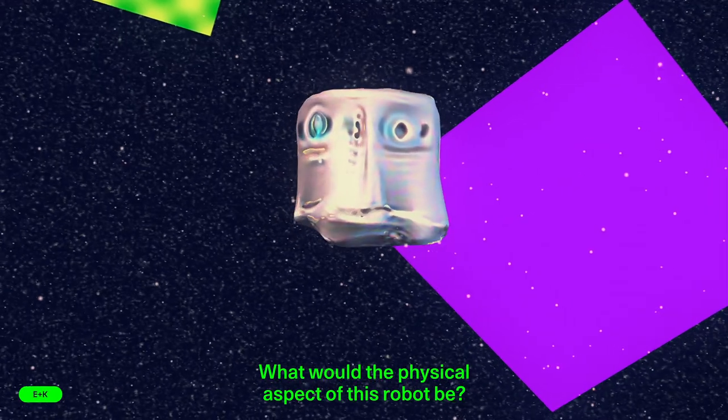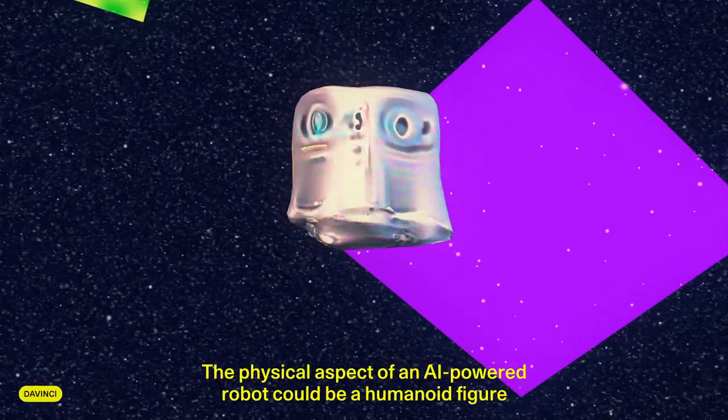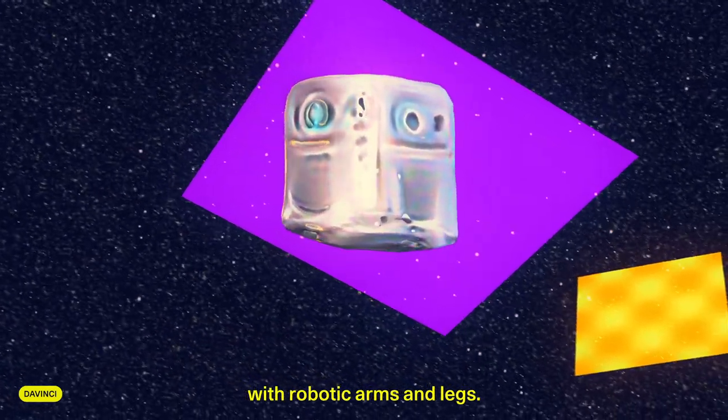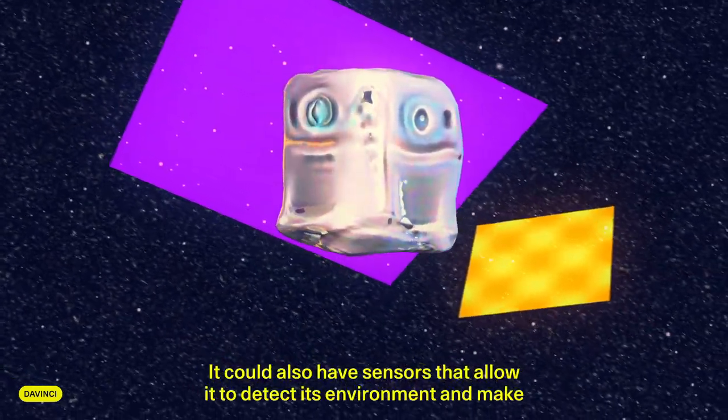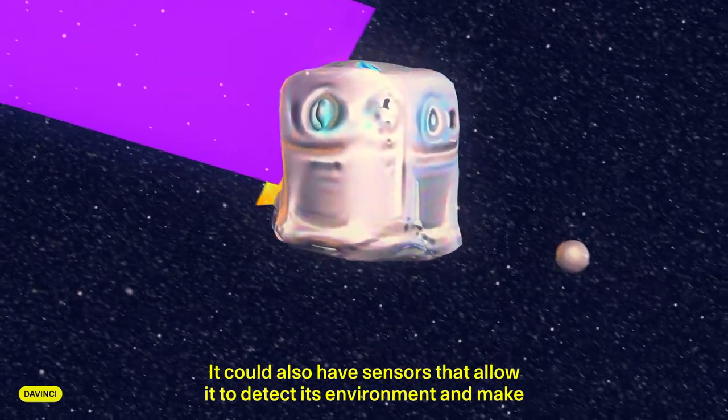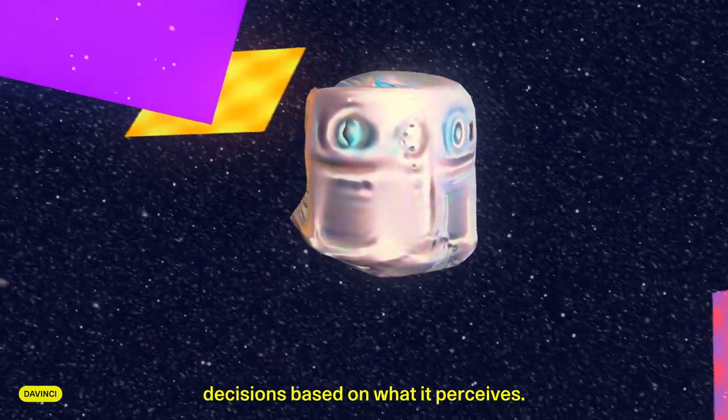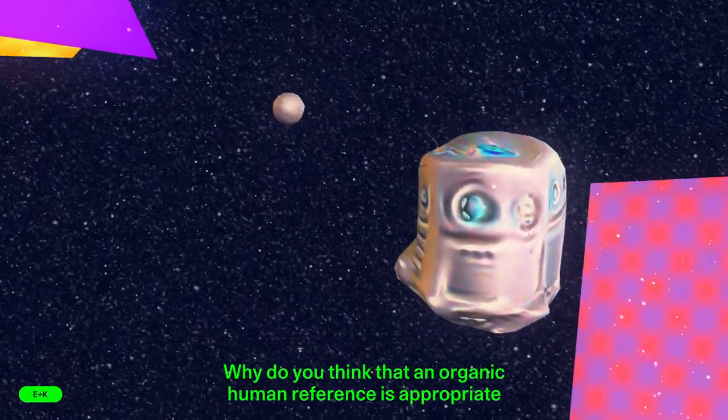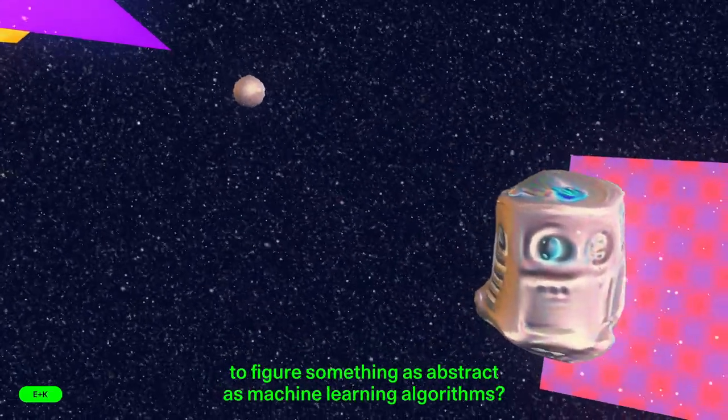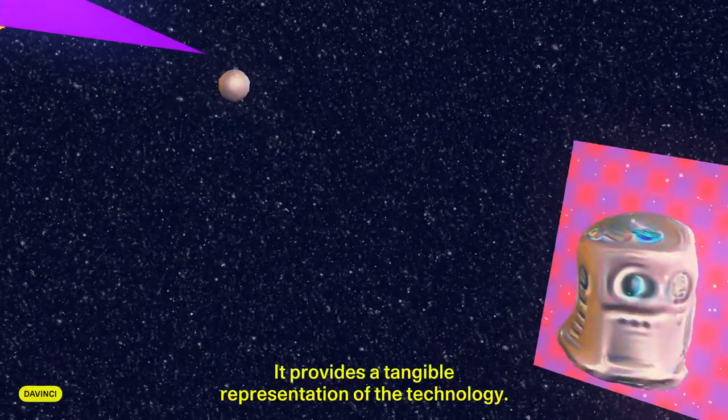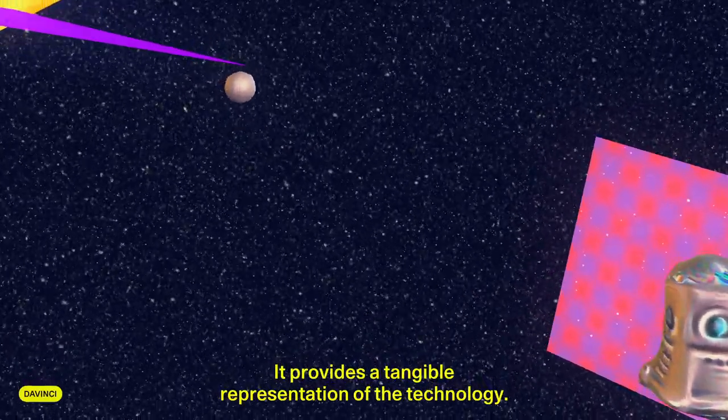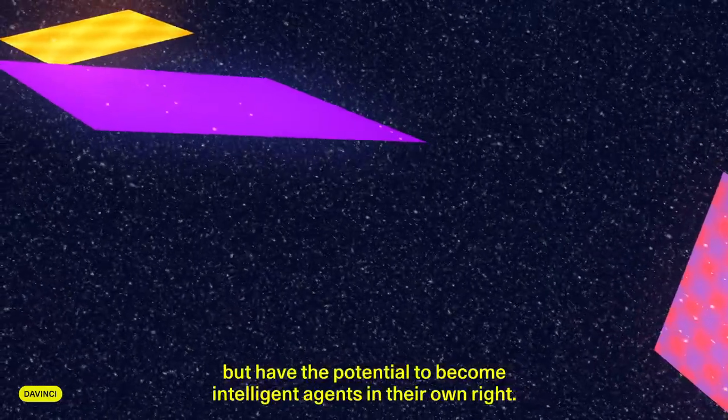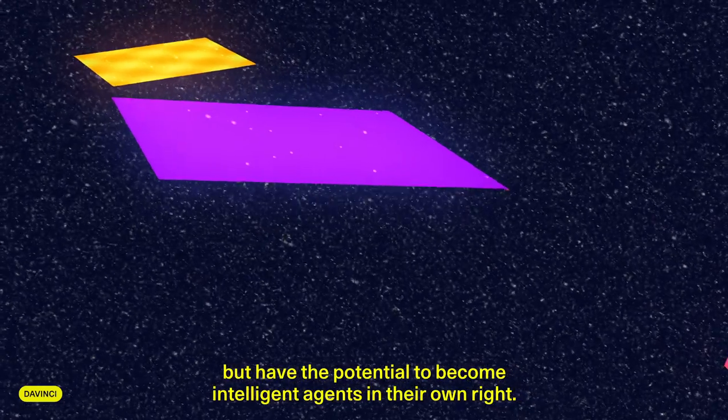What would the physical aspect of this robot be? The physical aspect of an AI-powered robot could be a humanoid figure with robotic arms and legs. It could also have sensors that allow it to detect its environment and make decisions based on what it perceives. Why do you think that an organic human reference is appropriate to figure something as abstract as machine learning algorithms? It provides a tangible representation of the technology. It also serves as a reminder that machines are not just tools, but have the potential to become intelligent agents in their own right.